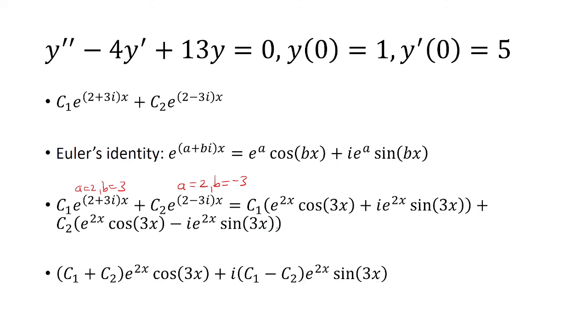We can factor out e^(2x)cos(3x), and that's c₁ and c₂ as the coefficients. And then for e^(2x)sin(3x), we have ie^(2x)sin(3x). We have c₁ again and then negative c₂, so we factor those out.